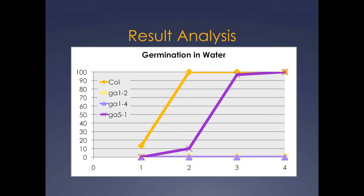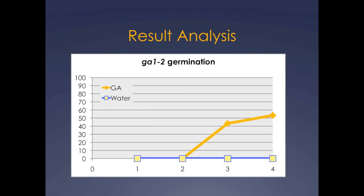For instance, notice that while the GA5-1 mutant and the Columbia wild type reached similar levels of germination by day 4, their rates of germination were quite different, with Columbia reaching higher germination levels by day 2. Be sure to also compare the germination of each genotype under both water and GA treatment. For example, the GA1-2 mutant should only germinate in the presence of exogenous GA.